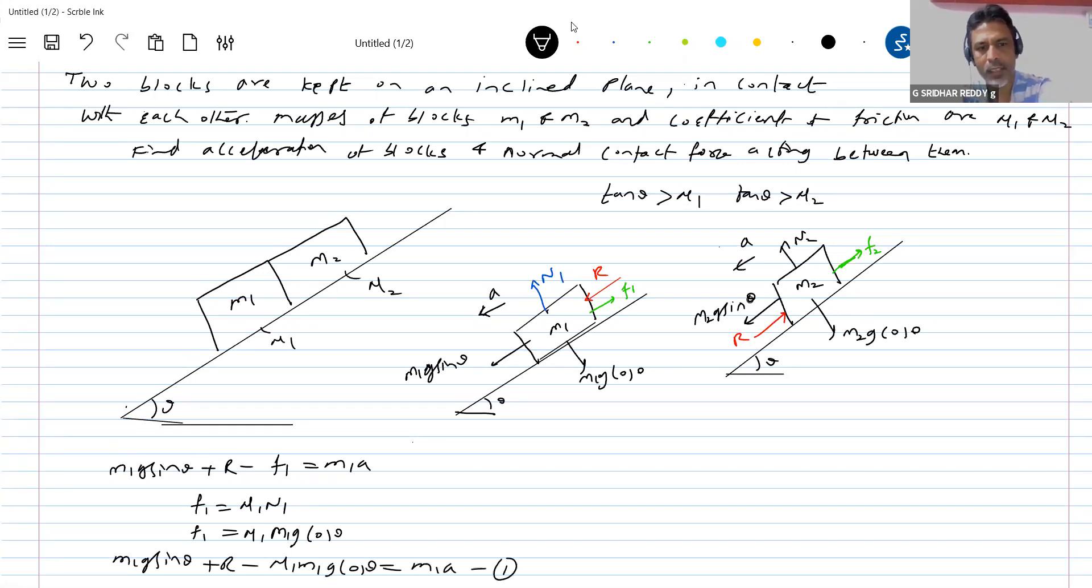Similarly, M2g sin theta minus R minus F2 equal to M2a. F2 is mu N2. What is N2? N2 should be equal to M2g cos theta, so mu M2g cos theta. Substituting this, M2g sin theta minus R.